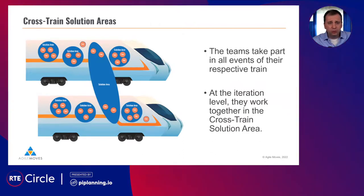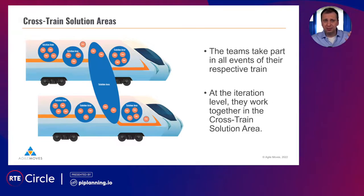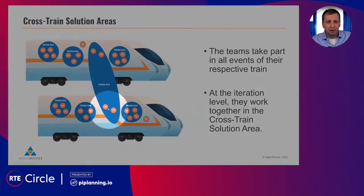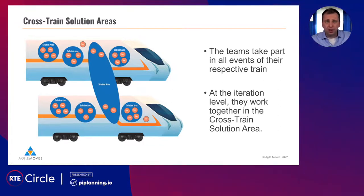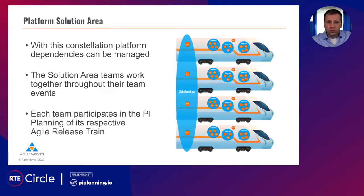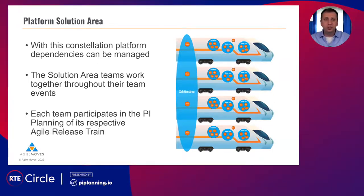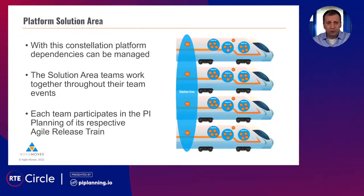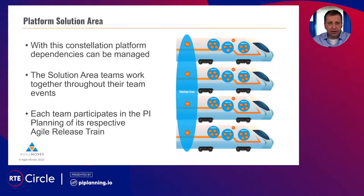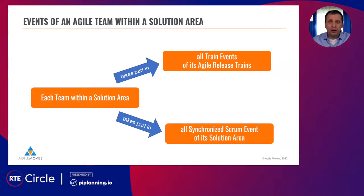Here you see an agile release train with several solution areas and also teams in it. You could have a solution area spanning across several agile release trains — for instance, a certain system required in two release trains means those teams have to synchronize closely together while also catering to the needs of their respective release trains. It could also be that you have a platform relevant for each train — like a continuous integration server — where Scrum teams in each train have to ensure alignment across all trains, and a solution area can take that form.